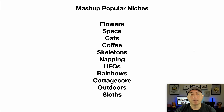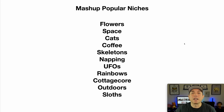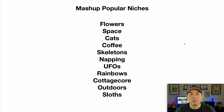Here are some niches you can mash up: flowers, space, cats, coffee, skeletons, napping, UFOs, rainbows, cottagecore, outdoors, sloths. You can go to ChatGPT and type 'what are the most popular niches,' or go to Redbubble where you're selling and find popular niches. Then combine them — a cat drinking coffee, a skeleton in a UFO, a sloth in a cottagecore style. Mashing things up makes a better sticker than just a cat or just a coffee by itself — you grab both niches and people who love both things.